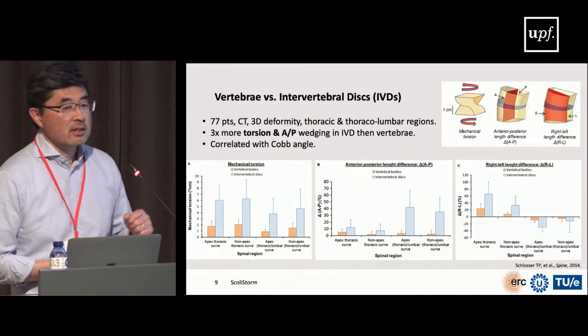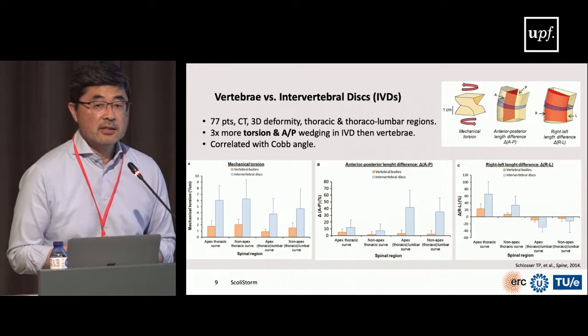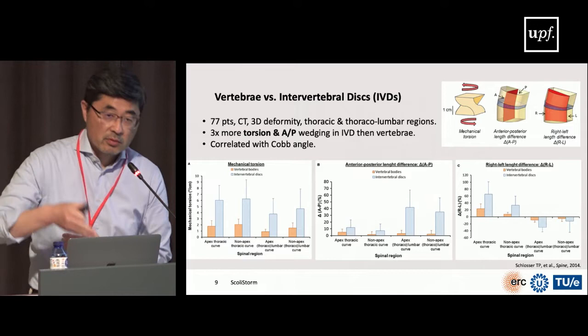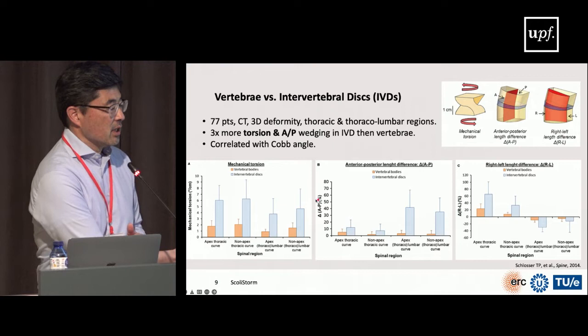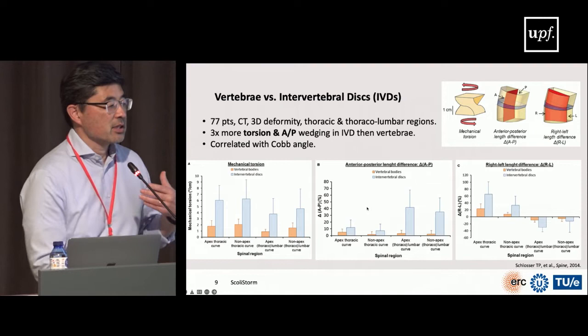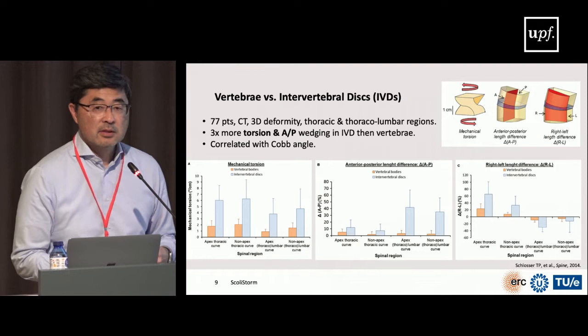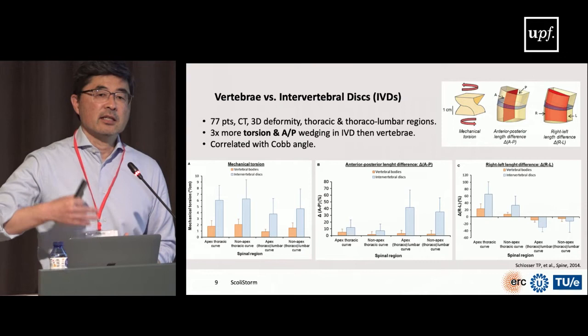That initial work was done in a very small cohort. We did studies in Utrecht with 77 patients using CT scans — allowing us to measure disc deformity in rotation, flexion-extension, and side-to-side wedging. We found that wedging in both rotation and flexion-extension is three times greater in the intervertebral disc than in the vertebra, and it correlates directly with the initial Cobb angle. This strengthens the idea that everything starts in the disc, involving both rotation and asymmetric anterior-posterior growth of the spine.